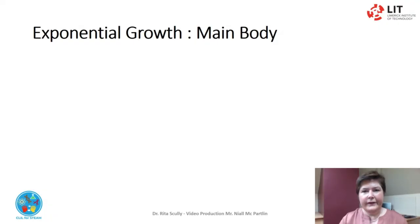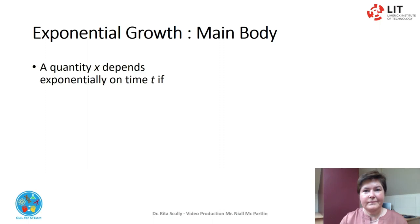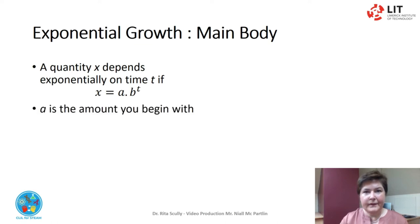Let's look at this as a formula. A quantity x depends exponentially on time t if it is: x equals a multiplied by b to the power of t. A is the amount you begin with — in our example, one cent.